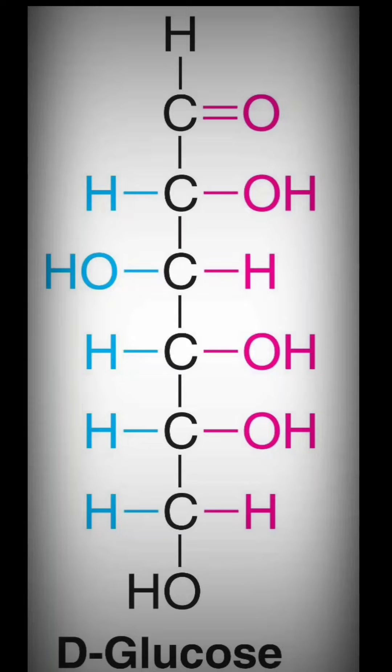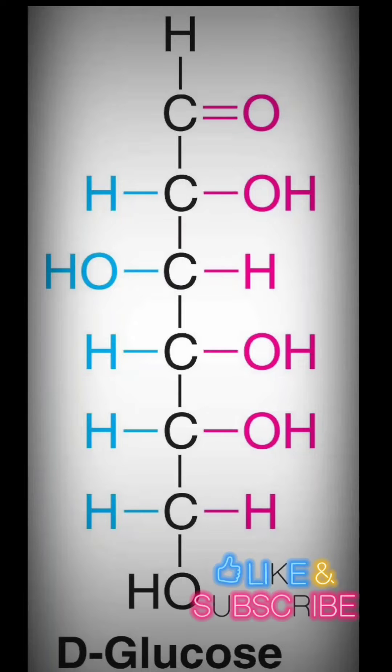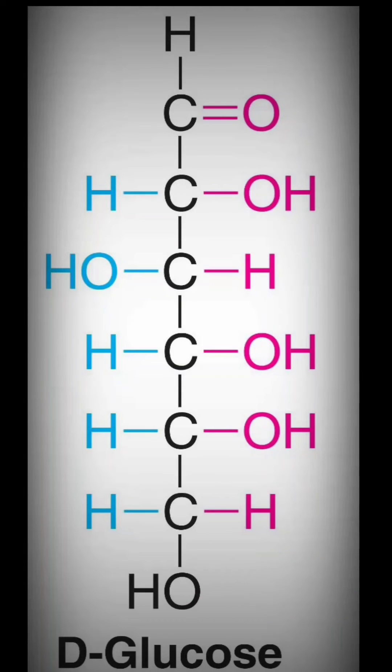So does glucose have one or four asymmetric carbon atoms? The answer is glucose has four asymmetric carbon atoms. So let us see how it has four asymmetric carbon atoms.